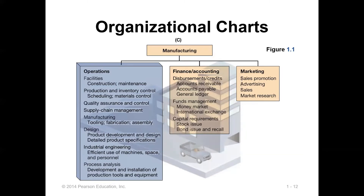In manufacturing, when you talk about operations, it will encompass things like facilities, production, construction and maintenance, inventory control. Quality assurance is surely a very critical component of operations management. Supply chain management is also important — today we're talking about the disruption of the supply chain due to COVID and how organizations manage to obtain supplies at the right time in order to produce.